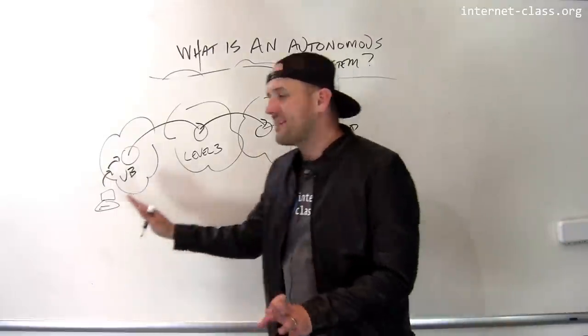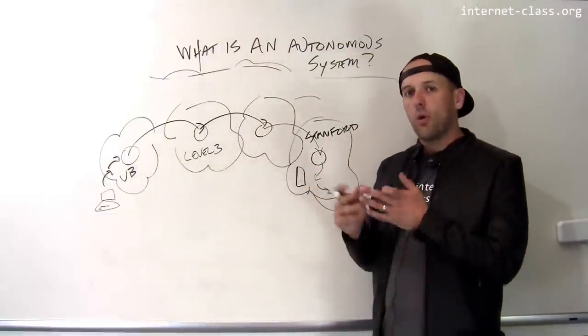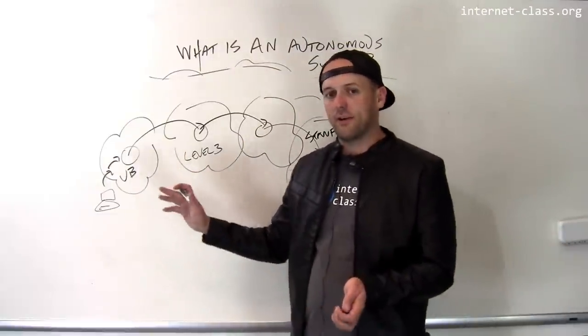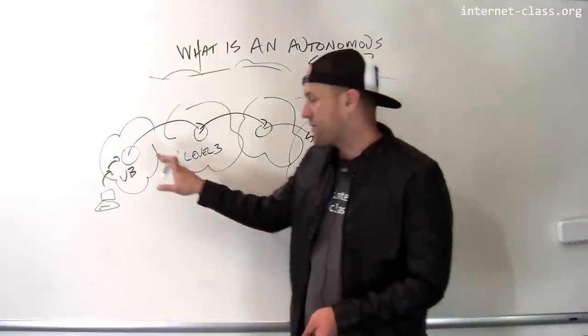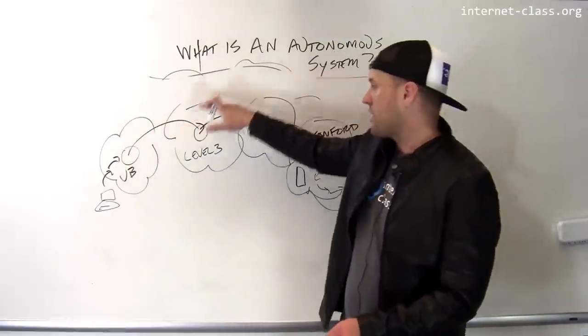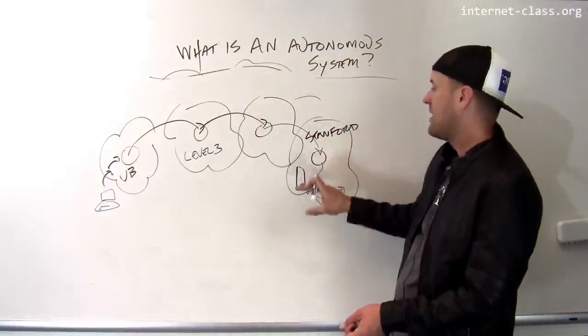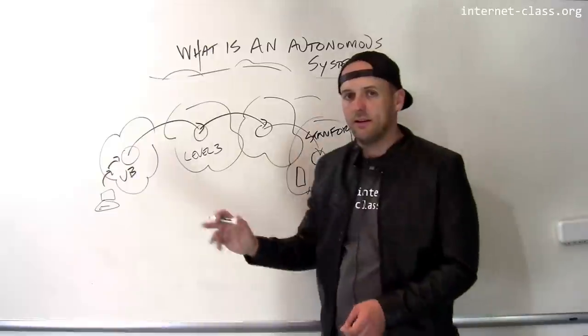So this is how these independently owned and operated computer networks cooperate in order to route traffic. And this reflects the fact that there's really this two-step routing process. So first I do routing within my autonomous system. Then I do routing across the autonomous systems. And when the packet arrives, then there's some more routing that happens within the autonomous system.